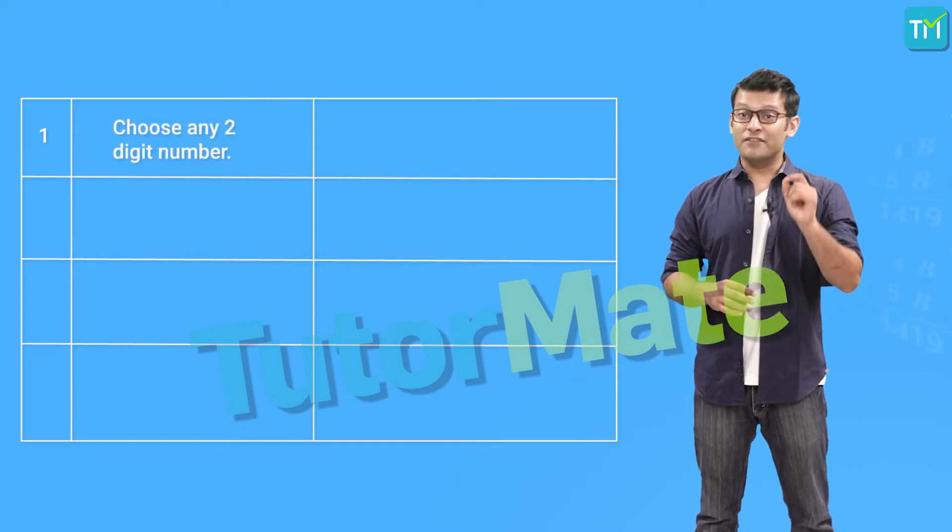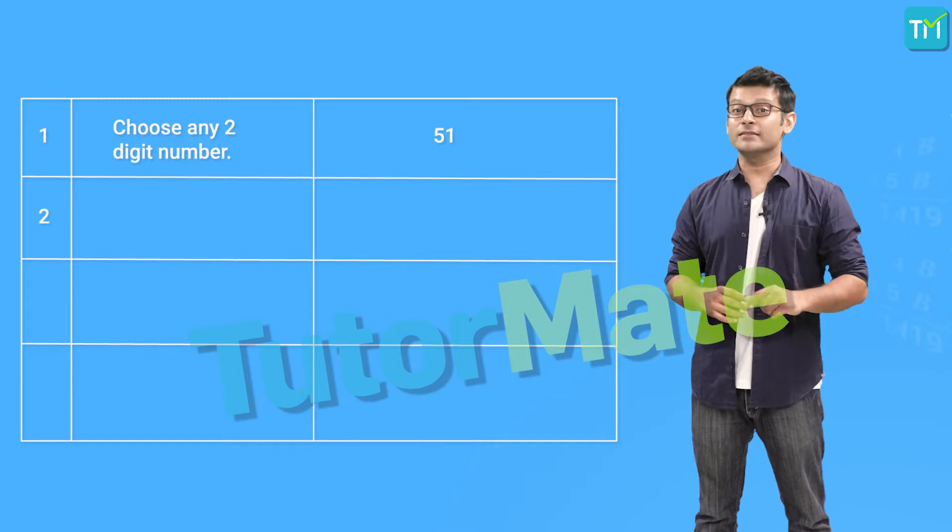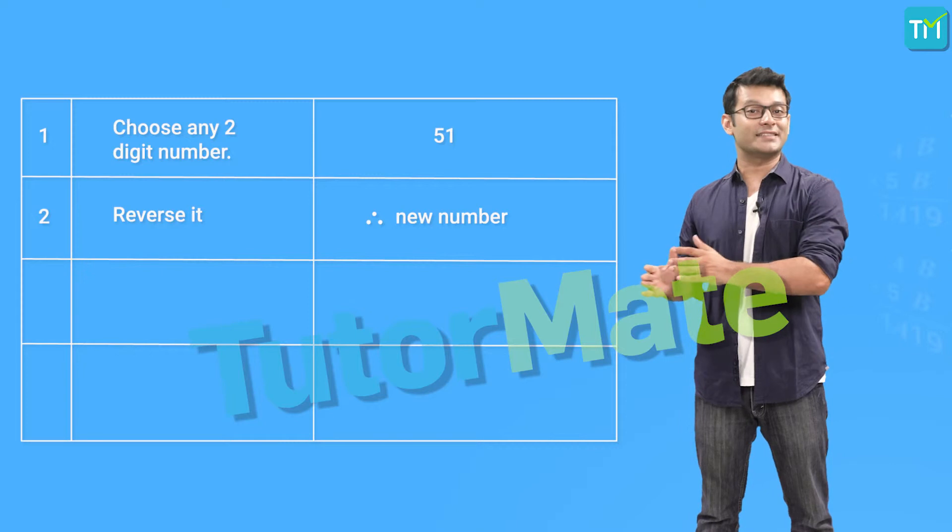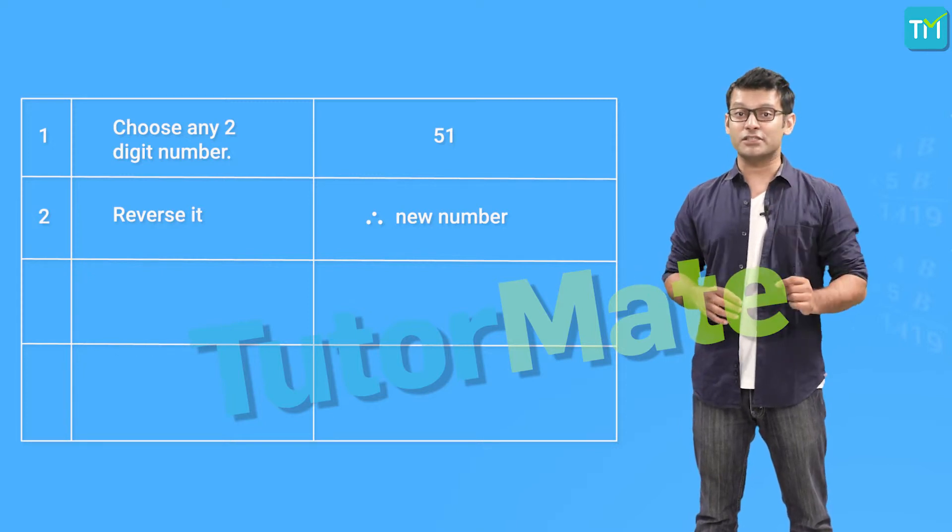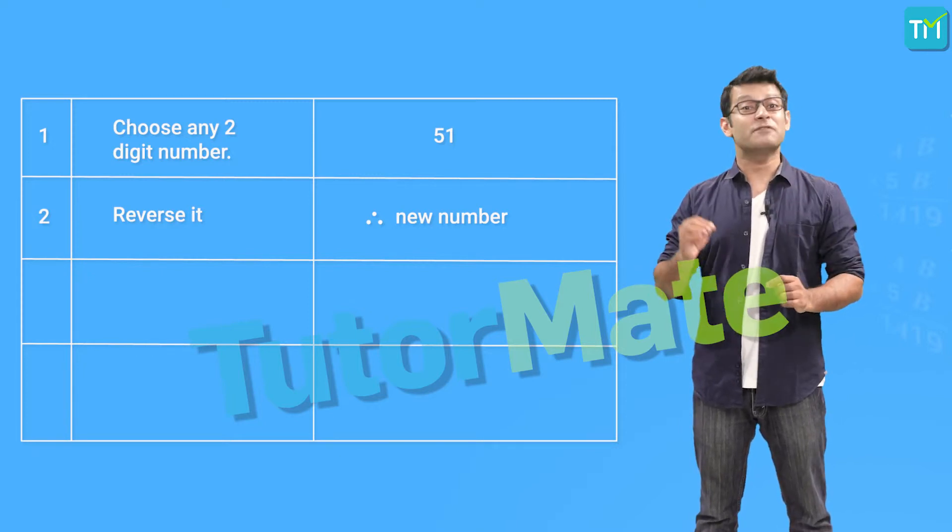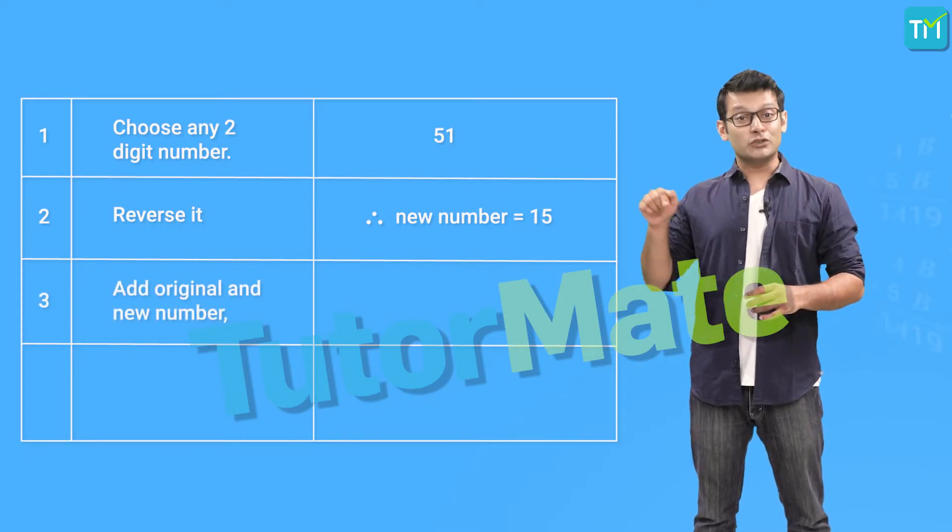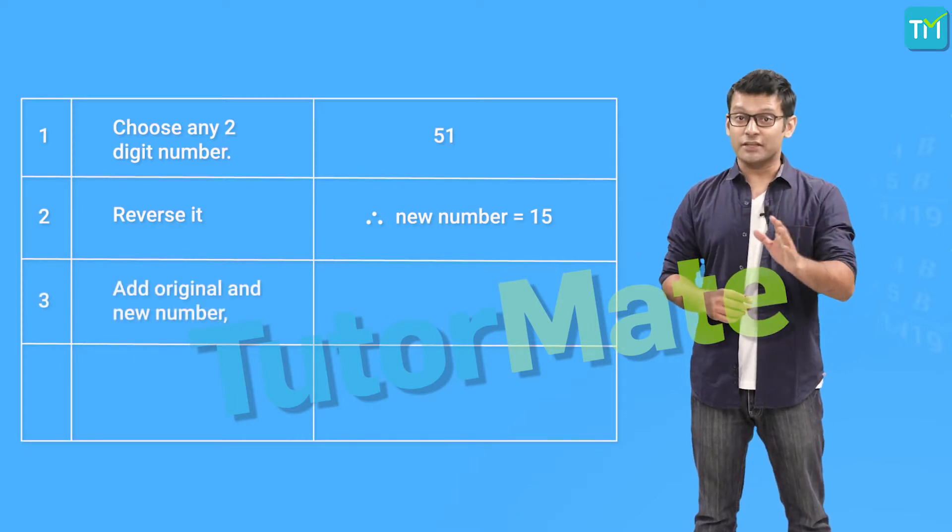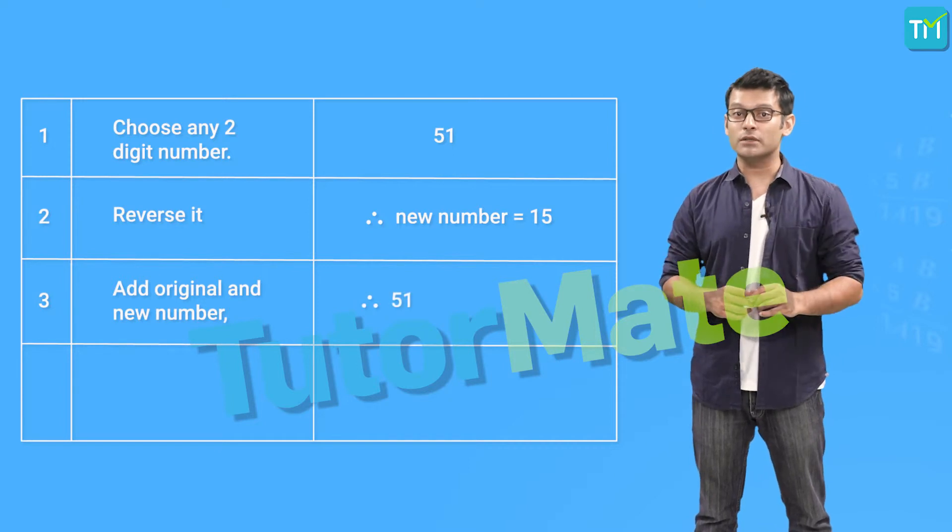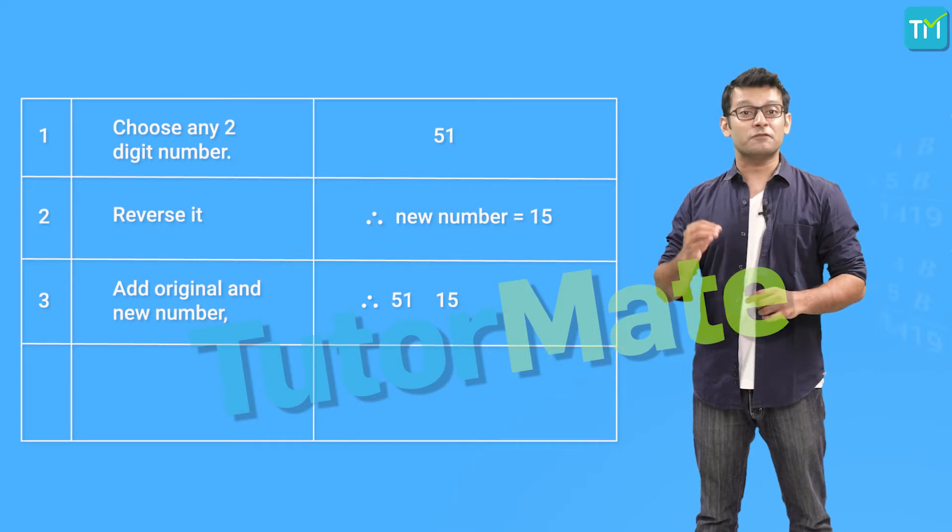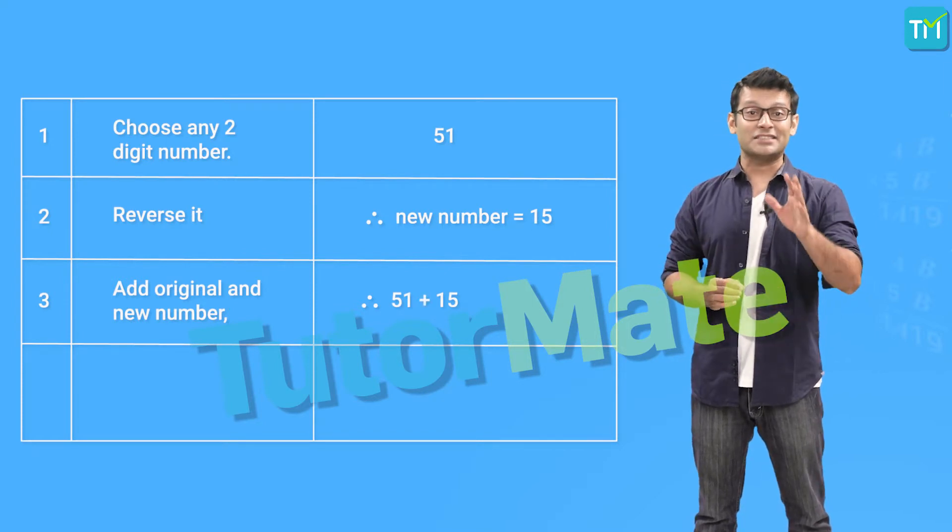for example 51, then reverse it to get a new number. Since I have considered 51 as an example, if I reverse the digits, the number we get will be 15. Next, add the original number to this number. Considering 51 as the original number and 15 as the new number, their sum would be 51 plus 15, that is 66.